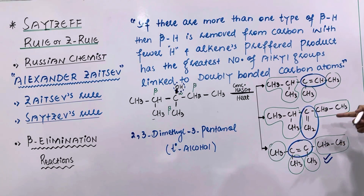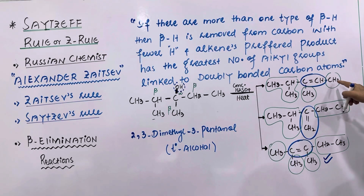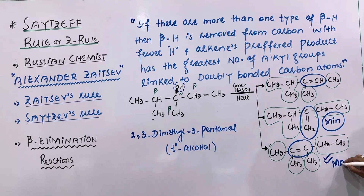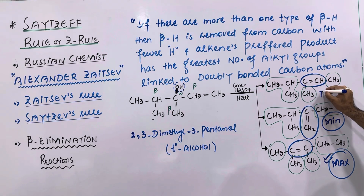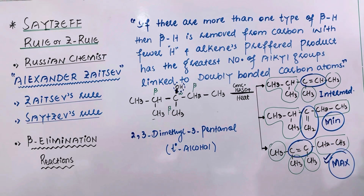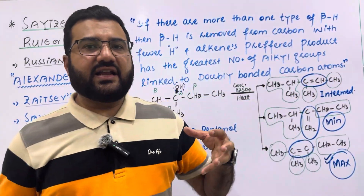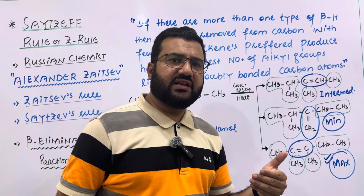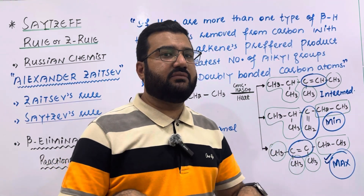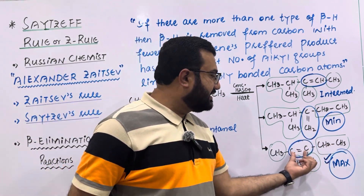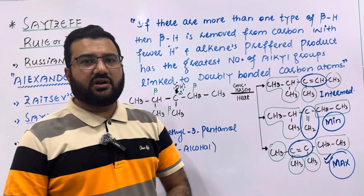In the reaction mixture, the alkene with the maximum alkyl groups will be present in the maximum amount, the one with only two alkyl groups will be present in minimum amount, and the intermediate one will be in between. So the Zaitsev rule simply states that in a beta elimination reaction, if there are more than one type of beta hydrogens, then the beta hydrogen is removed from the carbon which already has fewer hydrogen atoms, and the alkene product preferred is the one which has the maximum number of alkyl groups attached to the doubly bonded carbon atoms. This was all about the Zaitsev rule.